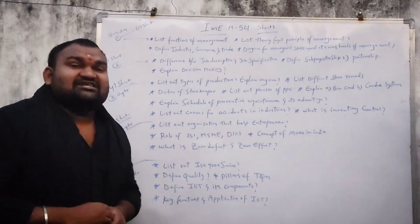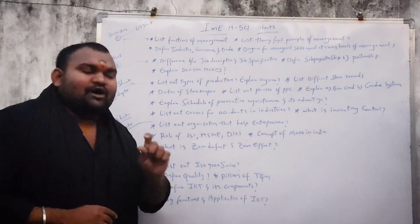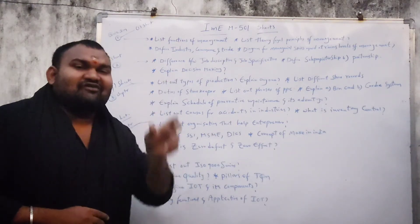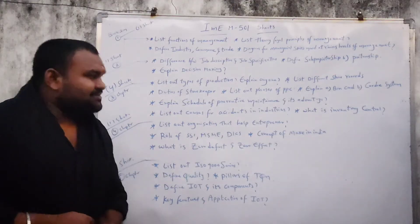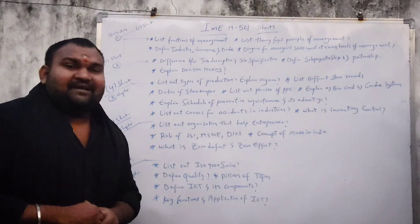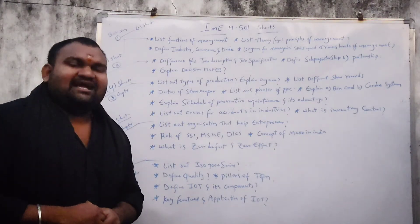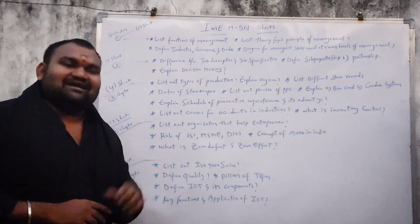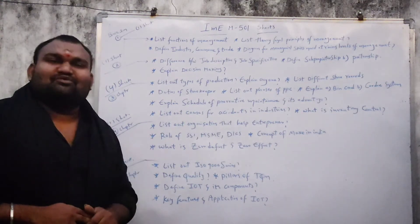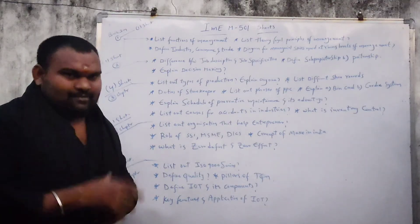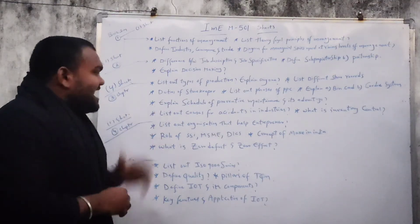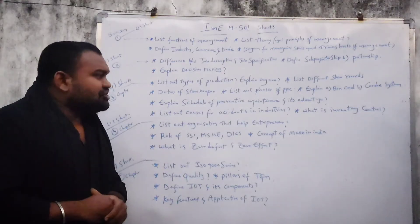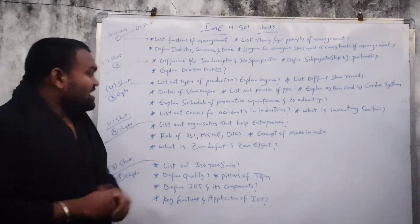Next, list out the phases of PPC — Production Planning and Control — list out the phases. Explain the B-Cortex system — that question is very important. B-Cortex system, explain for 3 marks. Next, schedule of preventive maintenance — preventive maintenance schedule and its advantages.